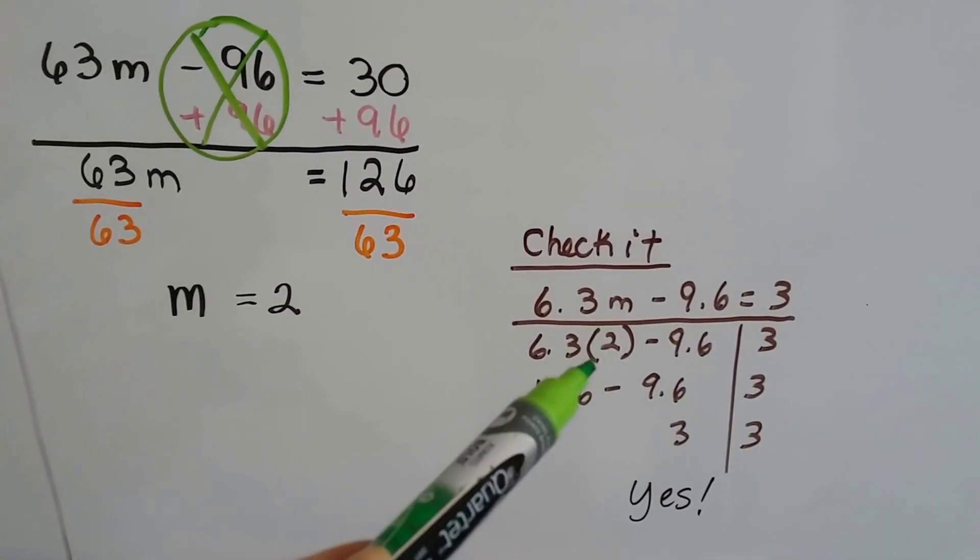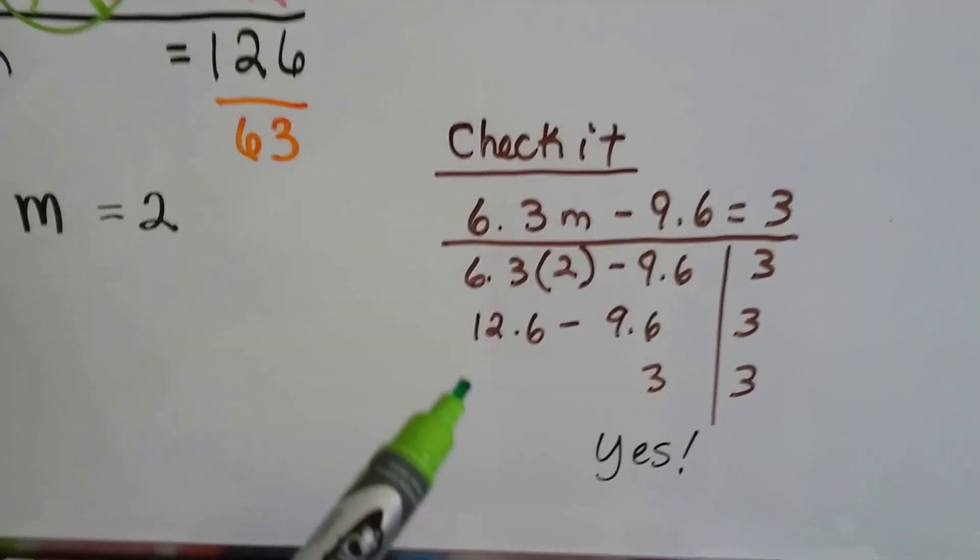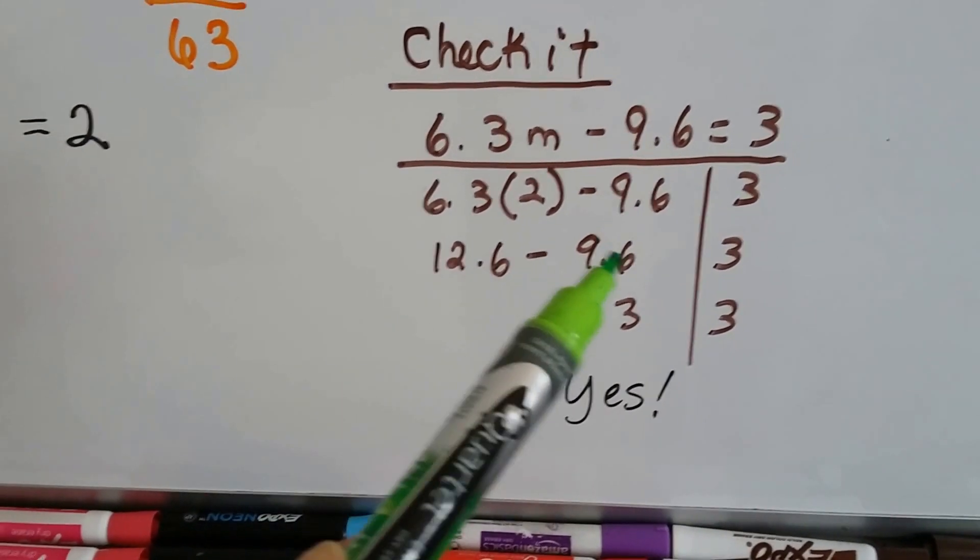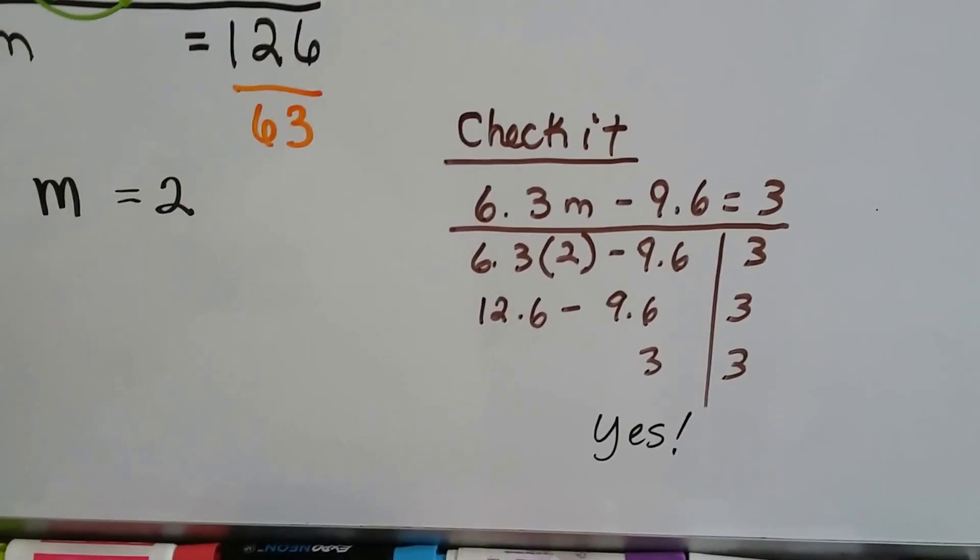We take 2, we plug it in for m, see if it works. And 6.3 times 2 is 12.6 minus 9.6. Yep, that's 3, it works.